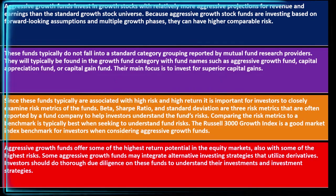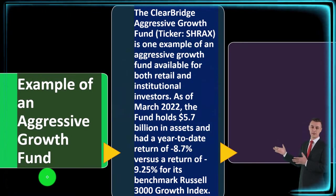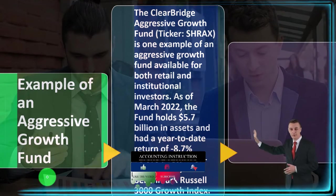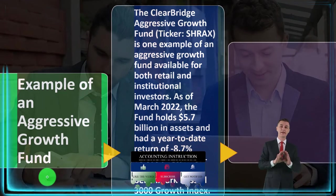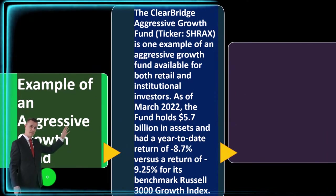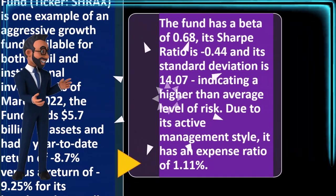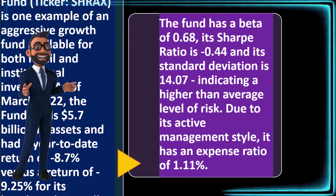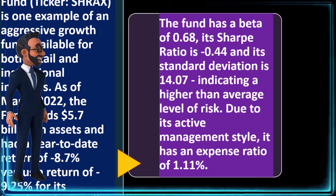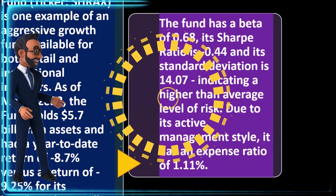Some aggressive growth funds may integrate alternative investing strategies that utilize derivatives. Investors should do thorough due diligence on these funds to understand their investments and investment strategies. As an example, the Clare Bridge Aggressive Growth Fund with the ticker symbol SHRAX is one example of an aggressive growth fund available for both retail and institutional investors. As of March 2022, the fund holds $5.7 billion in assets and had a year-to-date return of negative 8.7%, versus a return of 9.25% for its benchmark, the Russell 3000 Growth Index.